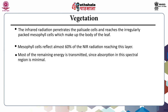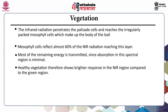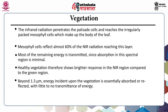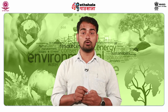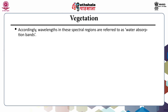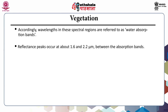Most of the remaining energy is transmitted since absorption in this spectral region is minimal. Healthy vegetation therefore shows brighter response in the NIR region compared to the green region. As leaf structure is highly variable between plant species, reflectance measurements in this range often permit discrimination between species even if they look the same in visible wavelengths. Beyond 1.3 micrometer, energy incident upon vegetation is essentially absorbed or reflected with little to no transmittance. Dips in reflectance occur at 1.4, 1.9 and 2.7 micrometer because water in the leaf absorbs strongly at these wavelengths — referred to as water absorption bands. Reflectance peaks occur at about 1.6 and 2.2 micrometer between the absorption bands.